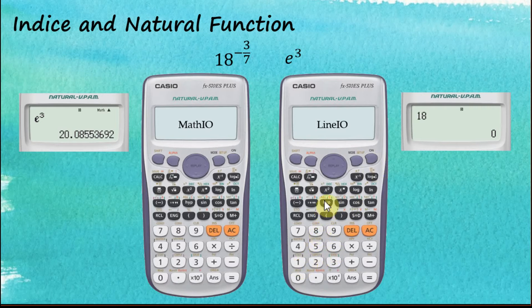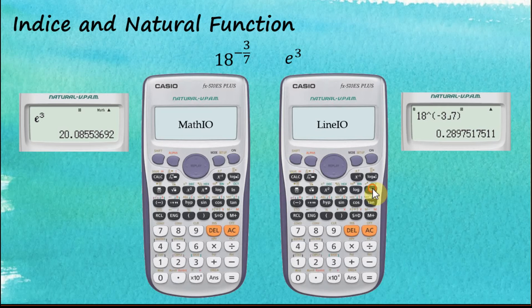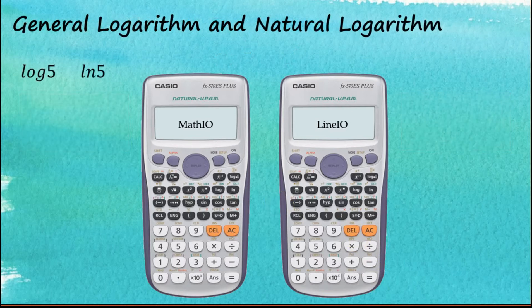For the Linear input/output: 1, 8, then to the power of, then negative 3 over 7, close brackets, and equal. It's almost the same. For the natural function: Shift, e, then 3, close bracket, and equal. That's how to do this.